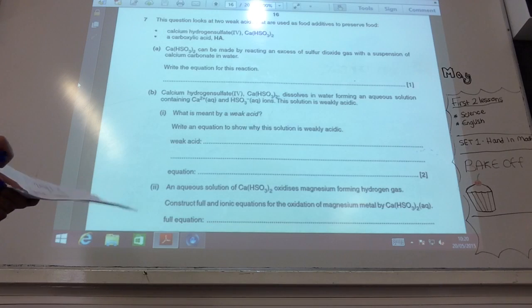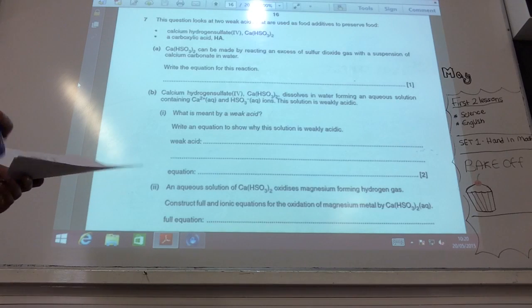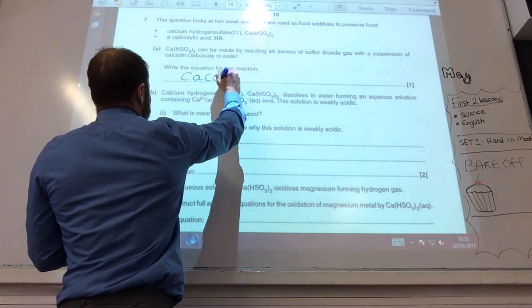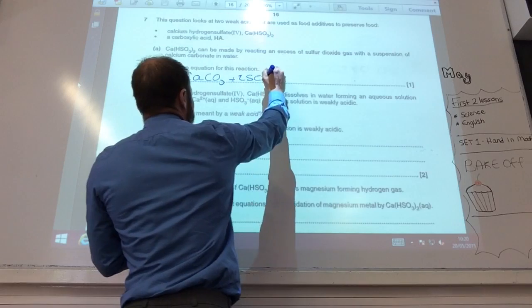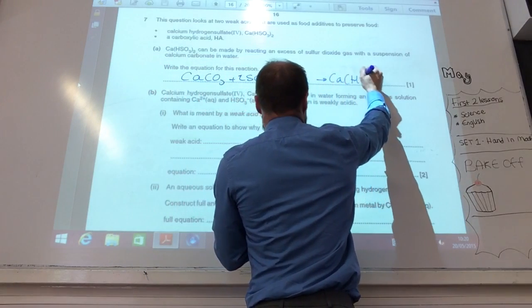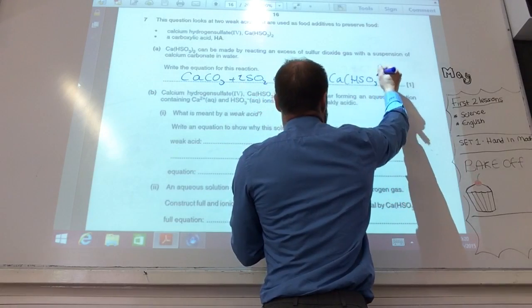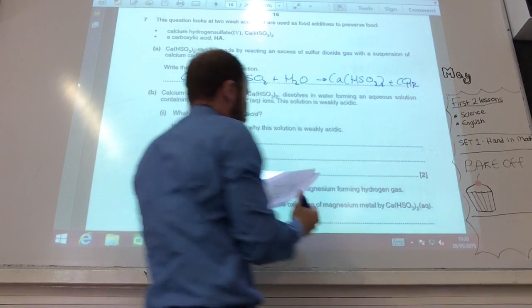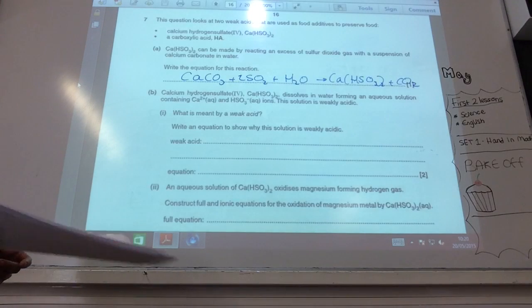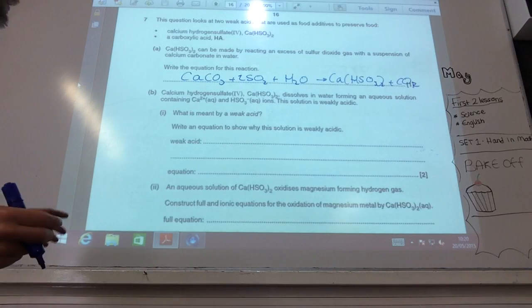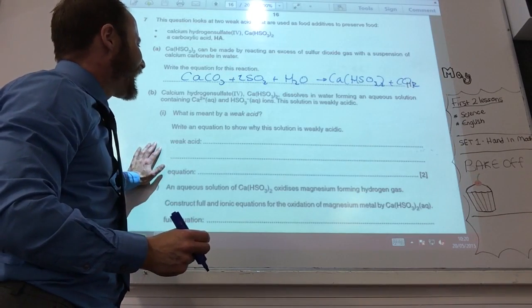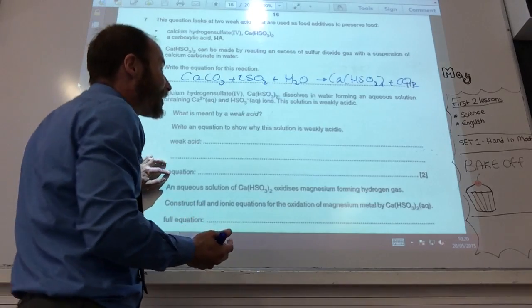Alright, so it's acid time. First one, I'm reacting calcium carbonate here with sulfur dioxide gas, water, I make calcium... Plus CO2 there. All I did was I wrote it the opposite way. I'll come and have a look at that. What is meant by weak acid, and weak acid is partially dissociated. What is the equation?